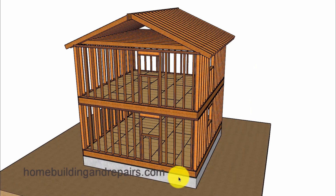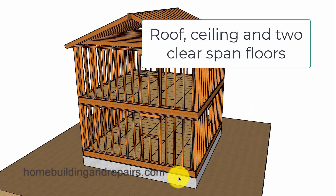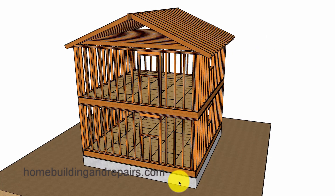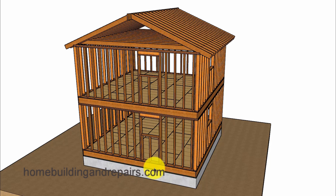In our last section, 'roof, ceiling, and two clear-span floors,' this would be any opening for a door or window in the basement or crawl space area, underneath a roof, a ceiling, and two floors. The lower level would fall into the 'roof, ceiling, and one clear-span floor' category, and the upper level would fall into the 'roof and ceiling' category.